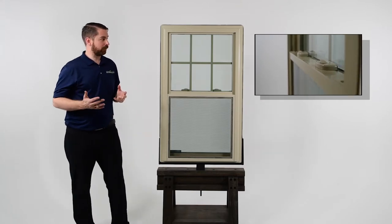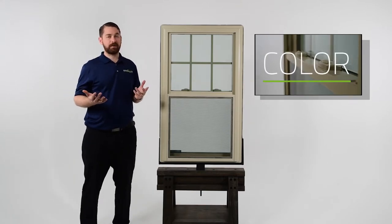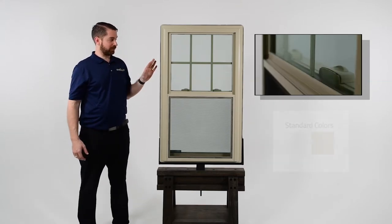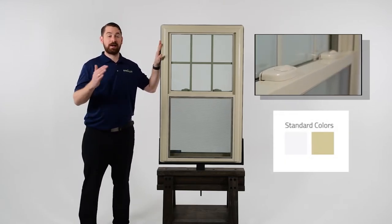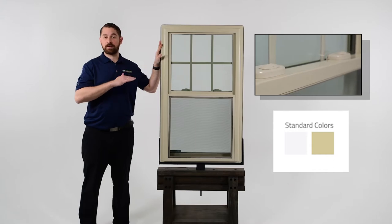And the last thing we'll cover is the color options on the windows. The windows have a standard white or almond interior and exterior color, so it's going to be the same color throughout the window.